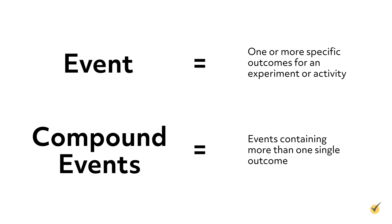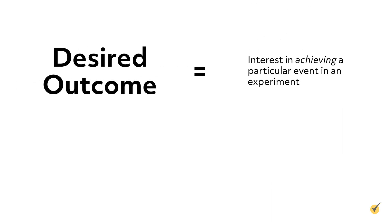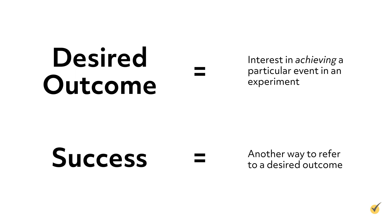If we were interested in achieving a particular event in an experiment, this outcome would be called the desired outcome. Another way to refer to a desired outcome is a success. For example, in a game where players win by rolling a six, the outcome six on the die would be considered the desired outcome or success.